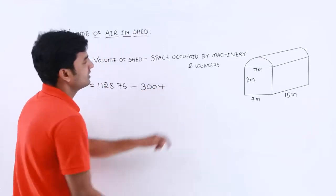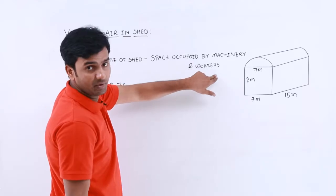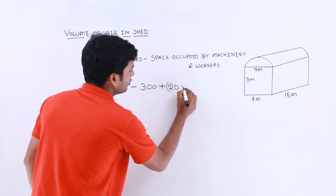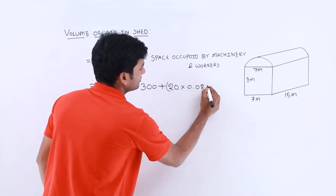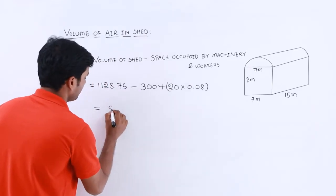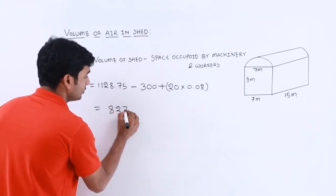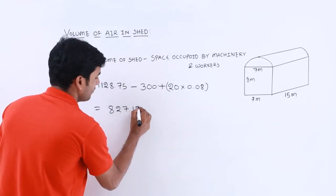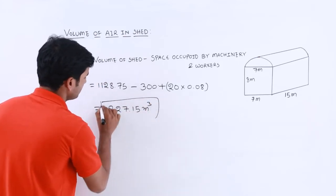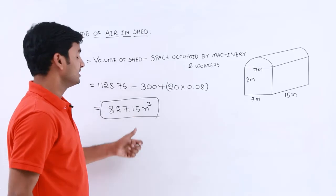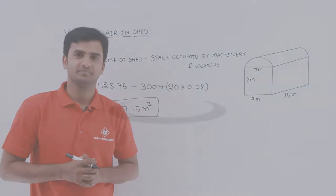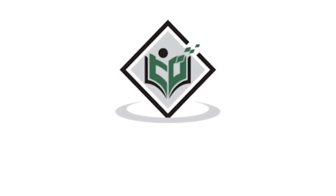Plus space occupied by complete workers. We have total 20 workers, each occupies 0.08 meter cube. So if you solve this we will get around 827.15 meter cube. So this is the complete volume of air present in the shed. Tutorialspoint.com simply easy learning.